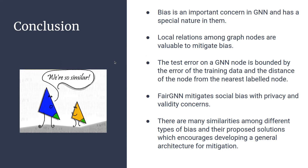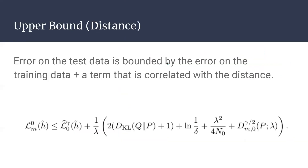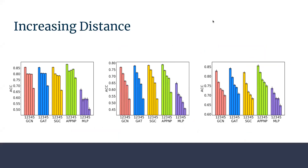Thank you for the really nice presentation. Let's open the floor to questions. First question from Nua: when you explained the relation between accuracy and distance, what kind of distance formulas are used — between node embeddings, attributes, or how are the distances between two nodes compared?